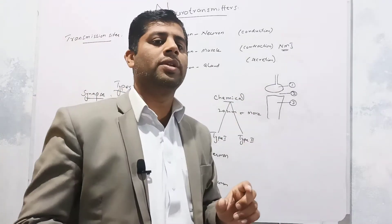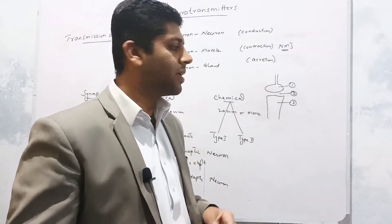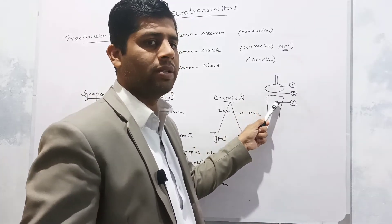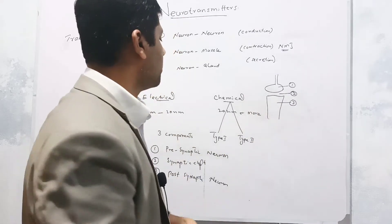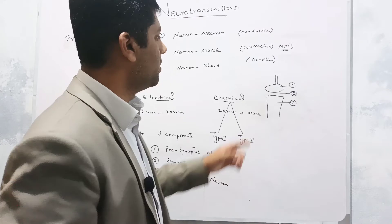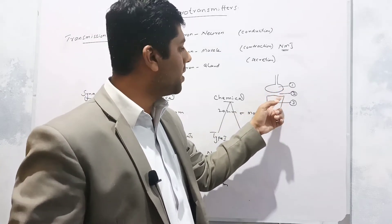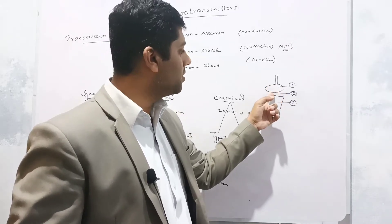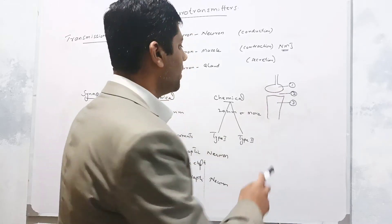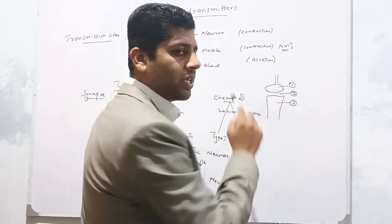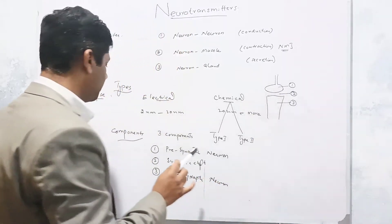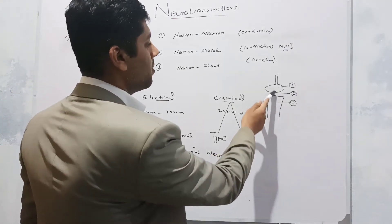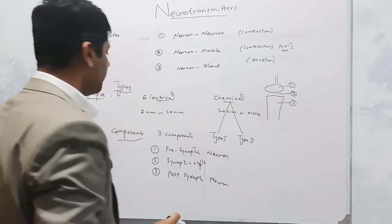The synapse is the gap or junction between two neurons — more specifically, the gap between the axon terminal of one neuron and the dendrite terminal of another neuron. The synapse comprises three components: the pre-synaptic neuron (before the synapse), the synaptic cleft (the gap), and the post-synaptic neuron. These three components make up the synapse.